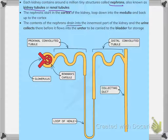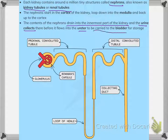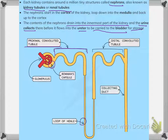The nephrons loop down into the medulla and then back up to the cortex. The contents of the nephrons drain into the innermost part of the kidney, where urine collects before it flows into the ureter, which travels to the bladder where urine is stored. The parts shown are the proximal convoluted tubule, the glomerulus, the Bowman's capsule, the loop of Henle, the collecting duct, and the distal convoluted tubule.